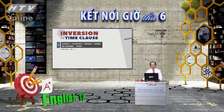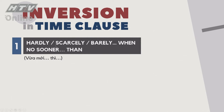Các cấu trúc inversion: 'Hardly', 'Scarcely', hoặc 'Barely' đi với 'when'; và 'No sooner' đi với 'than'. Những từ này có nghĩa là 'vừa mới cái gì đó thì...' Ví dụ: họ vừa mới ra khỏi nhà thì trời đổ mưa. Chúng ta xem ví dụ: 'I just locked the door when the phone rang' - vừa khóa cửa thì điện thoại reo.